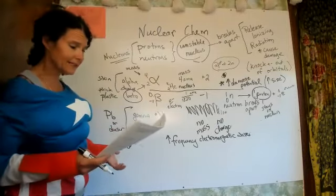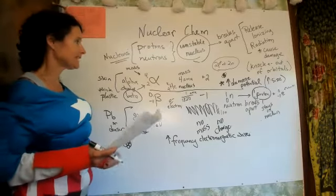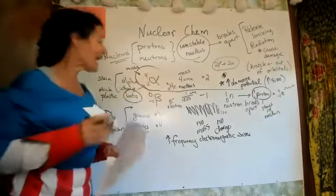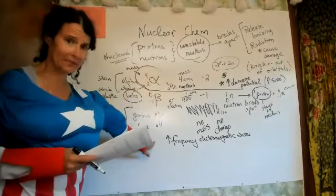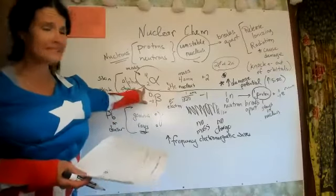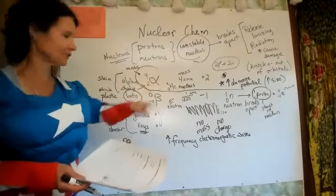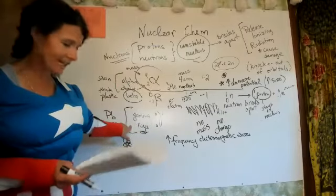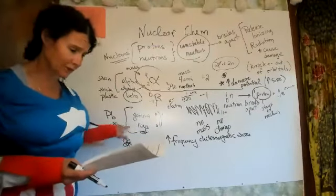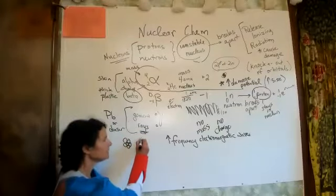The question below asks which one has the greatest ionizing potential. The answer is alpha — everybody always says gamma, probably thinking of the Hulk, but it's alpha because of its size. It has the greatest potential for damage. Gamma rays, however, have the greatest degree of penetration.